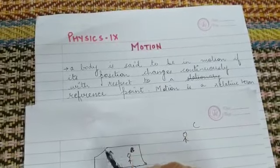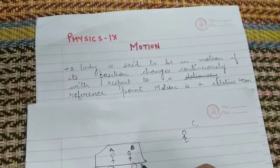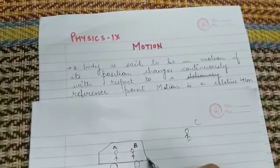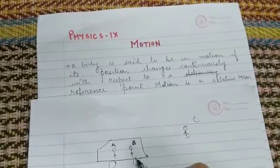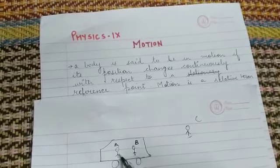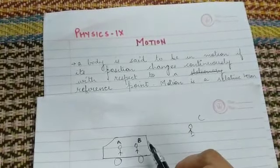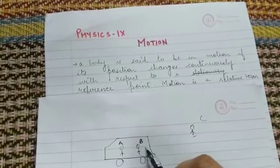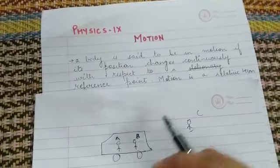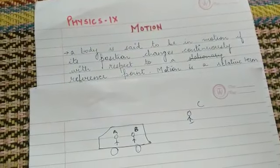That means, if with respect to a reference point — here if I take C as the reference point — the position of B is changing continuously, so for C, B is in motion. But for A, the position of B is not changing, so for A, B is at rest. I hope it is clear that motion is a relative term. Relative term means it depends upon the point of reference whether the object is at rest or in motion.